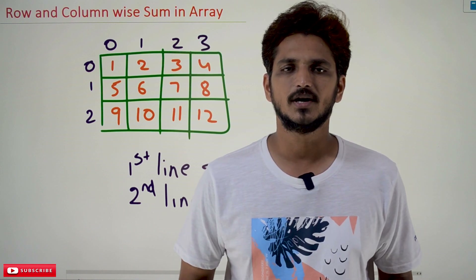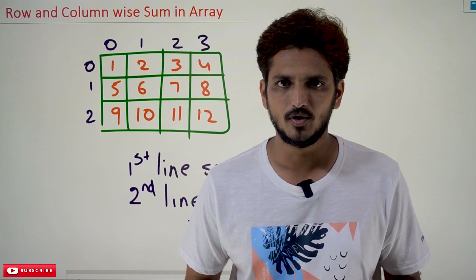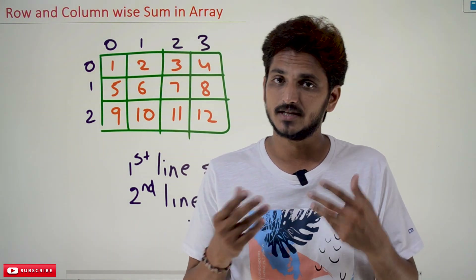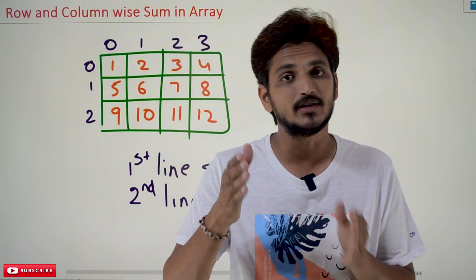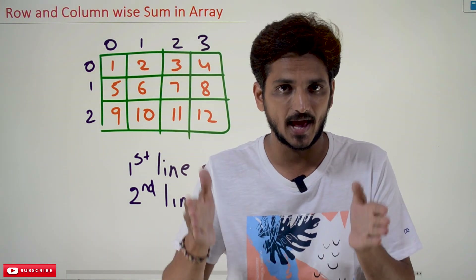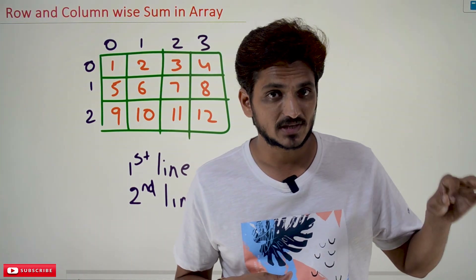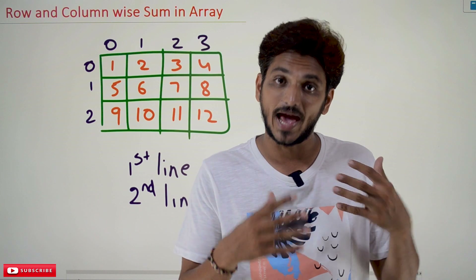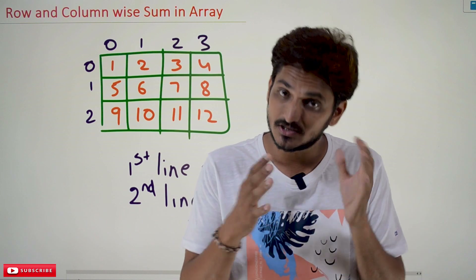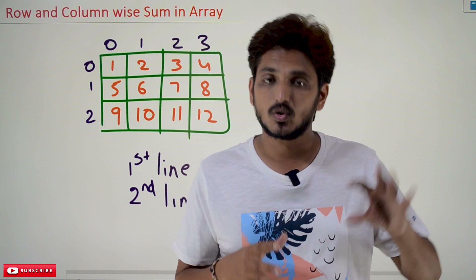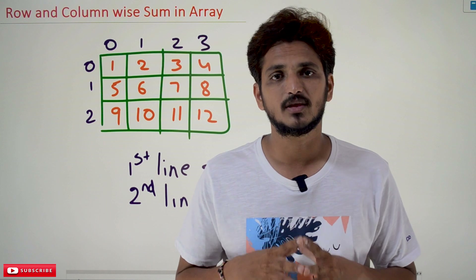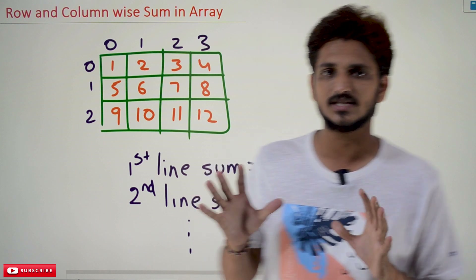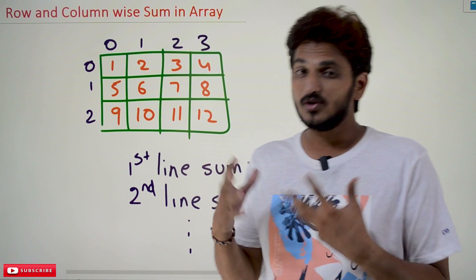Hi, welcome to Learning Monkey. I am Raghu. In this class we will discuss a small example that is row-wise and column-wise sum in an array. In our previous classes we clearly discussed about two-dimensional arrays and how to access the elements present in the array. Please watch those classes and come back here — the link for the playlist is provided in the description below.